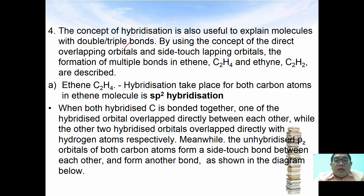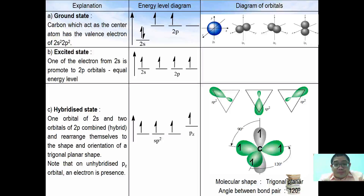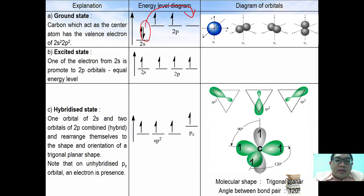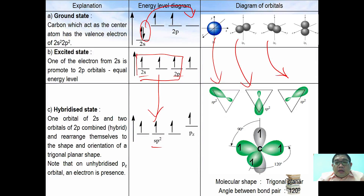The hybridization that takes place for both carbons in the ethene molecule is sp2 hybridization. When both hybridized carbons are bonded together, one hybridized orbital overlaps directly with the other, while the other two hybridized orbitals bond with hydrogen atoms. The unhybridized pz orbitals of both carbon atoms form a side-touch bond with each other. The ground state electronic configuration for carbon is 2s2 and 2p2. One electron from 2s excites to 2p, giving an excited state. In sp2 hybridization, one s and two p orbitals are involved, so only three orbitals change shape, leaving one pz orbital with one electron remaining unhybridized.